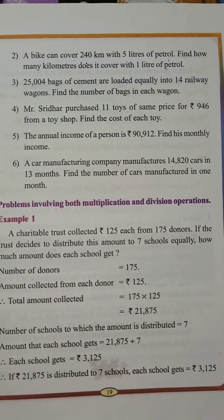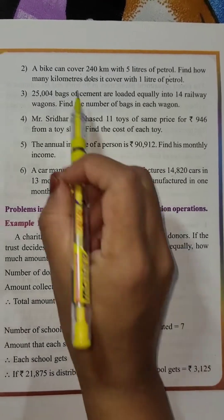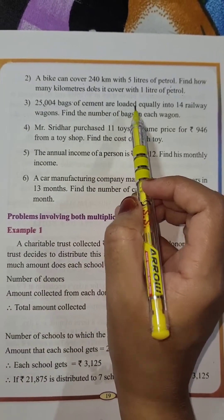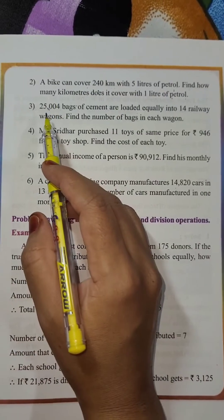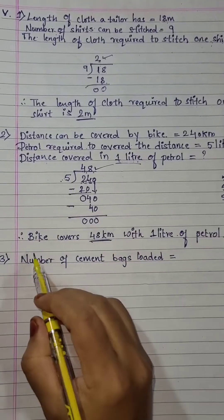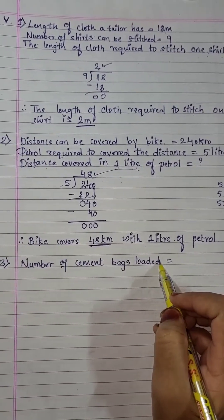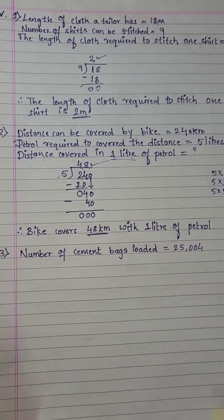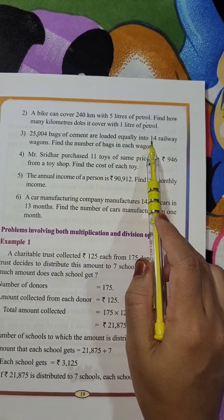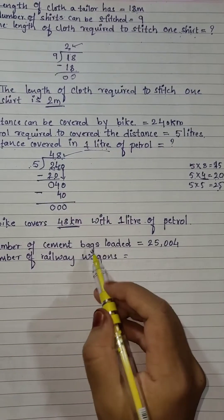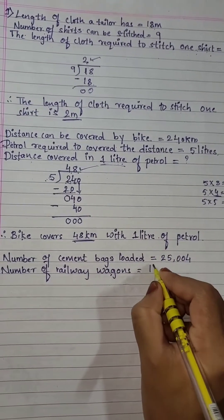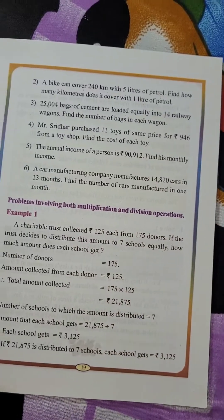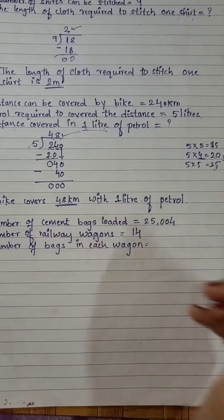Let us write the particulars. Number of cement bags loaded is 25,004. Number of railway wagons is 14. What you have to find out: the number of bags in each wagon — that will be our question mark.